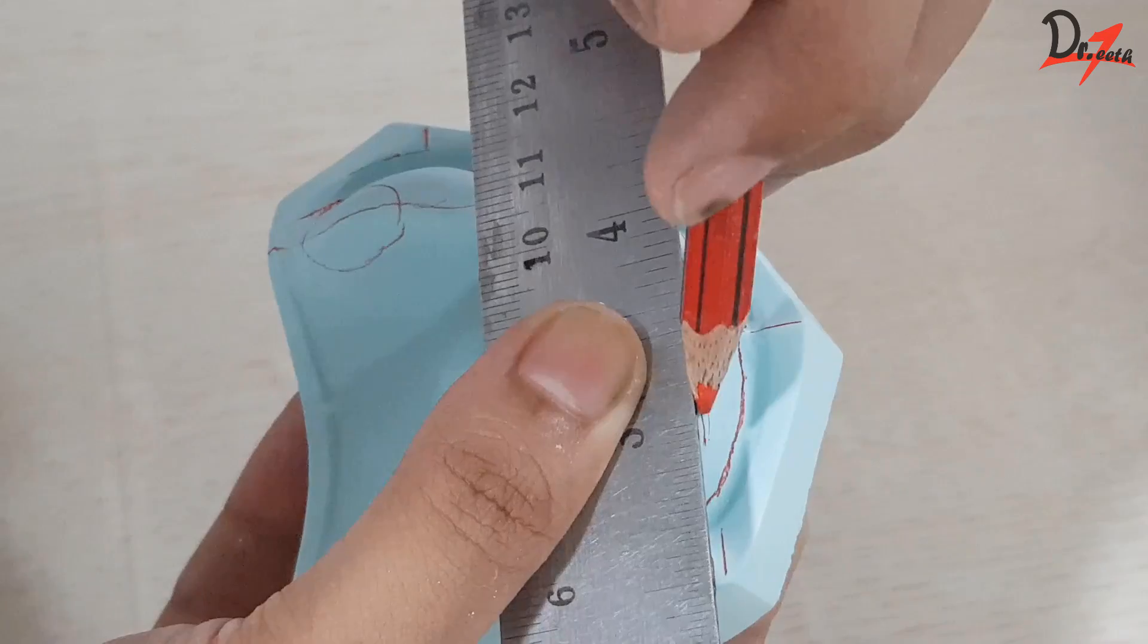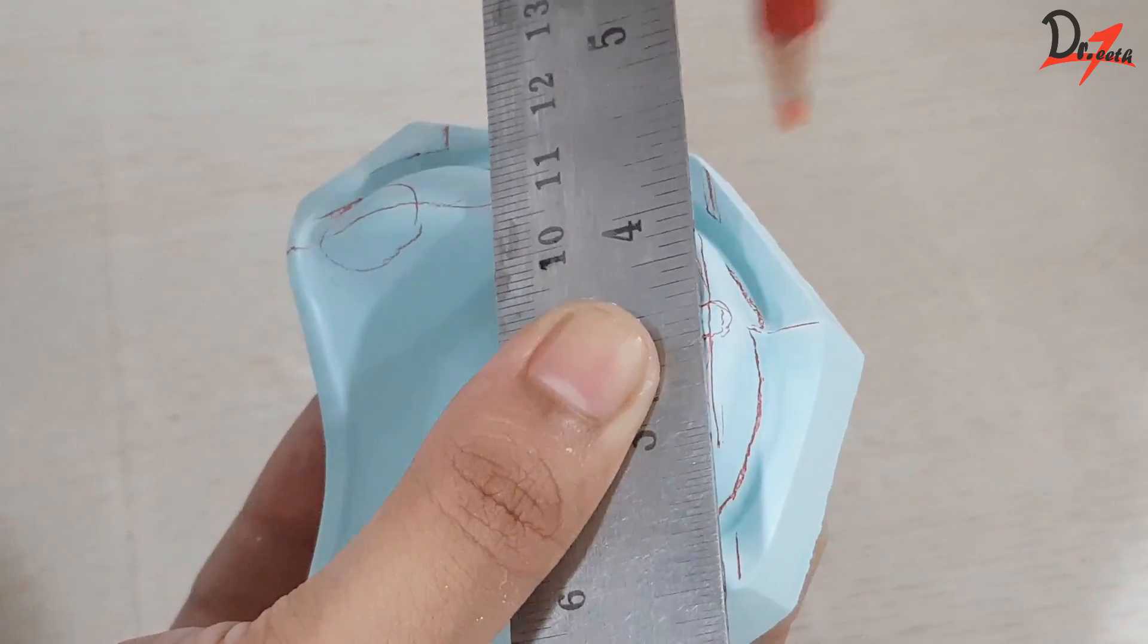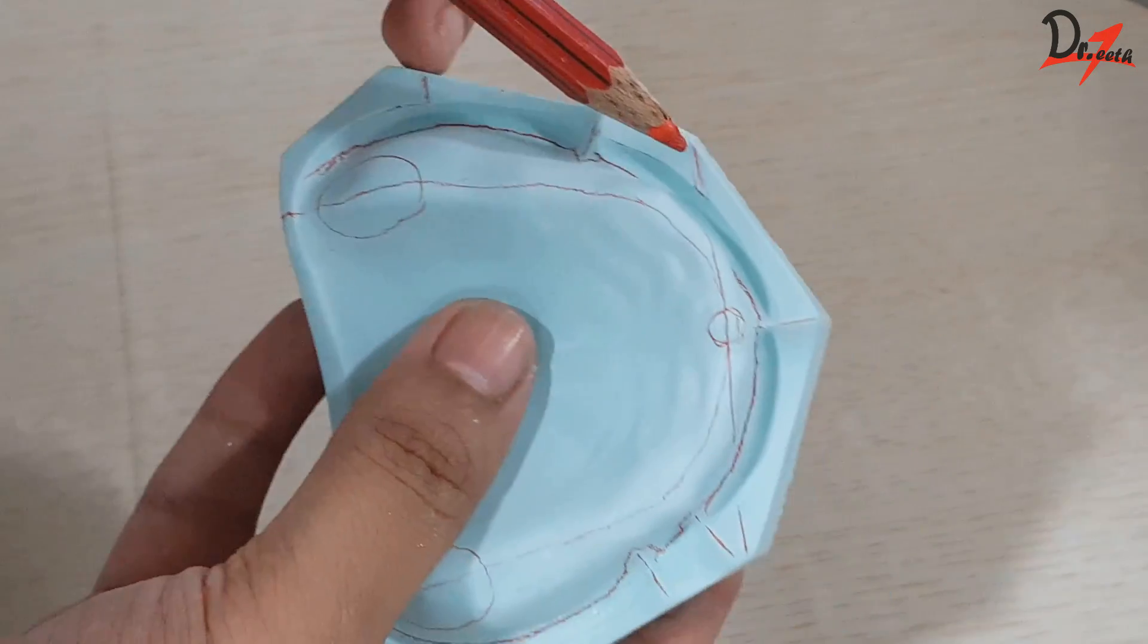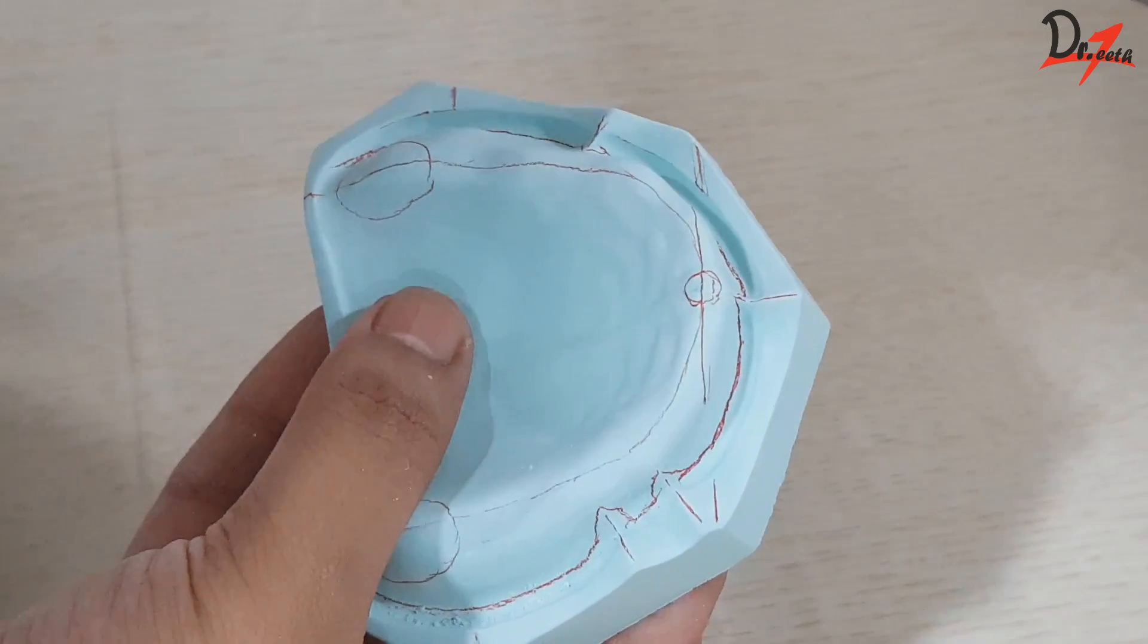But if we draw a line from the posterior part of the incisive papilla and extend it on the land area, that will be the position of the tip of the canine. And we will see this while teeth setting.